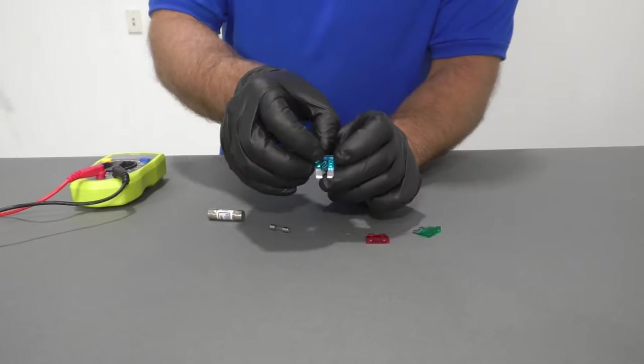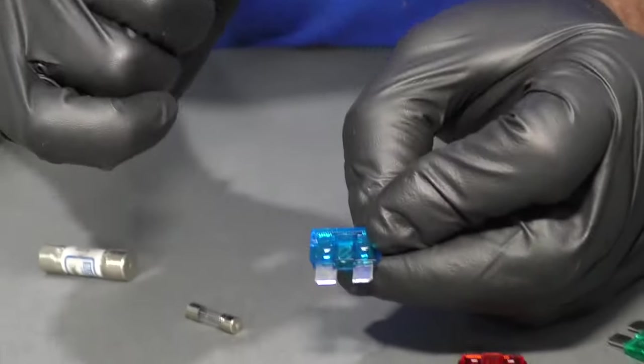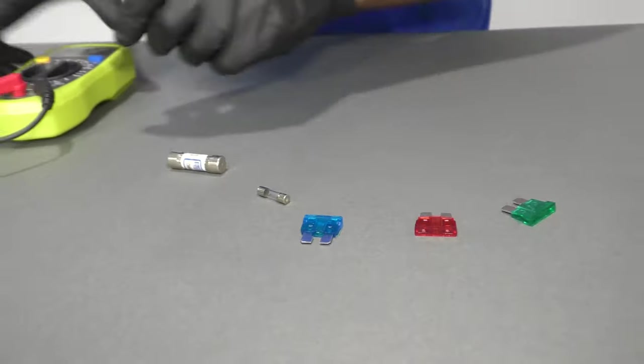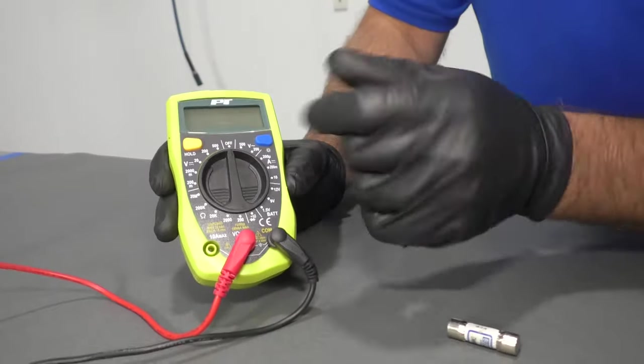What I mean by open is if the contact on the inside is burnt, then the circuit is going to be open, so that would not be good. We actually sell this meter at 1aauto.com.